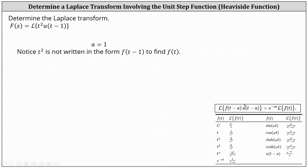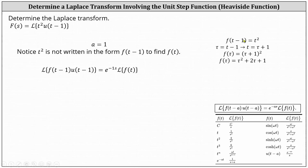Analyzing the shifting property, we know f of the quantity t minus one is equal to t squared, but we need to find f of t for the right side. To perform the change of variables, we begin with f of the quantity t minus one equals t squared, which is the given function. Next, we introduce the new variable tau, where tau equals t minus one, and therefore t equals tau plus one.